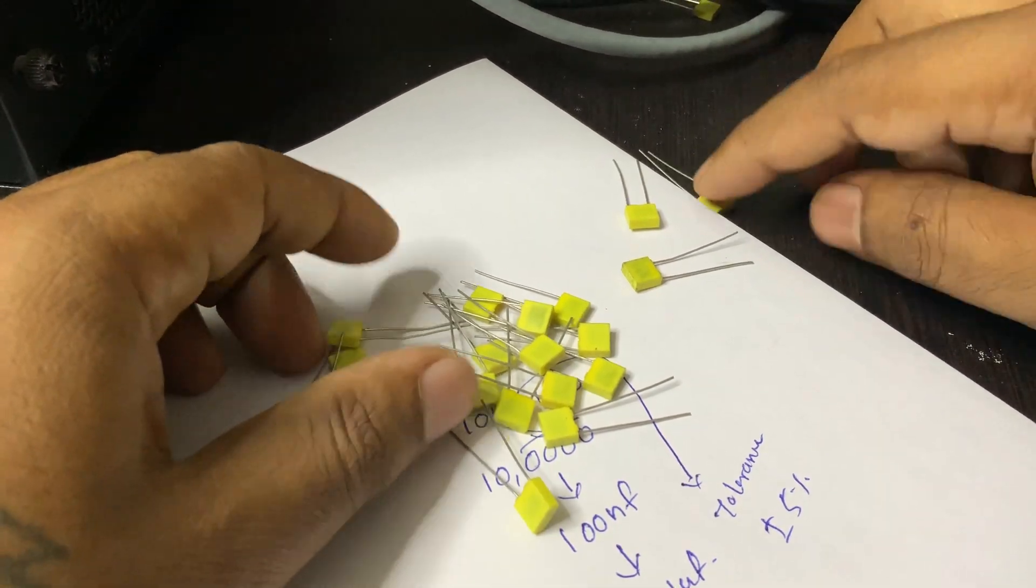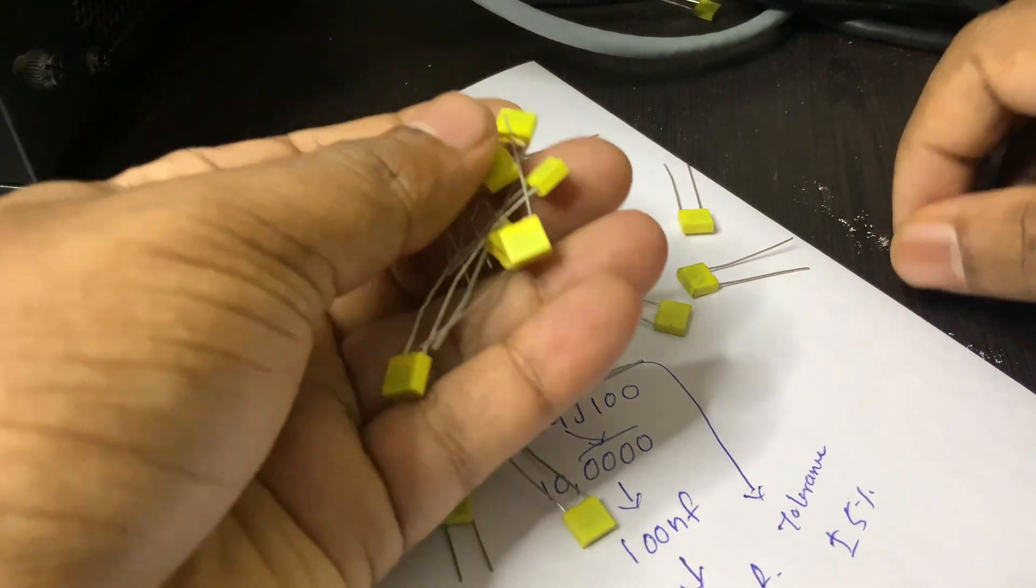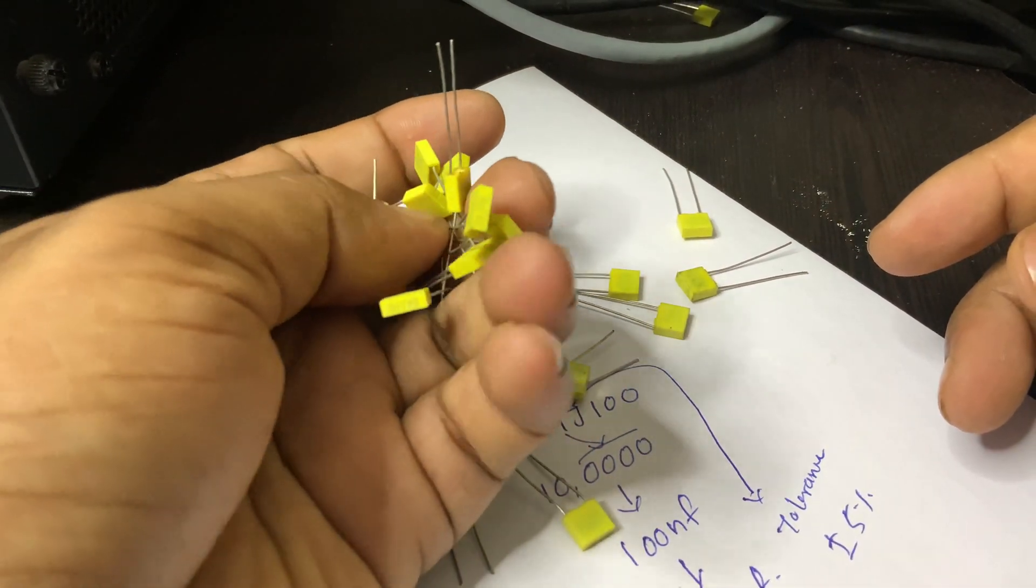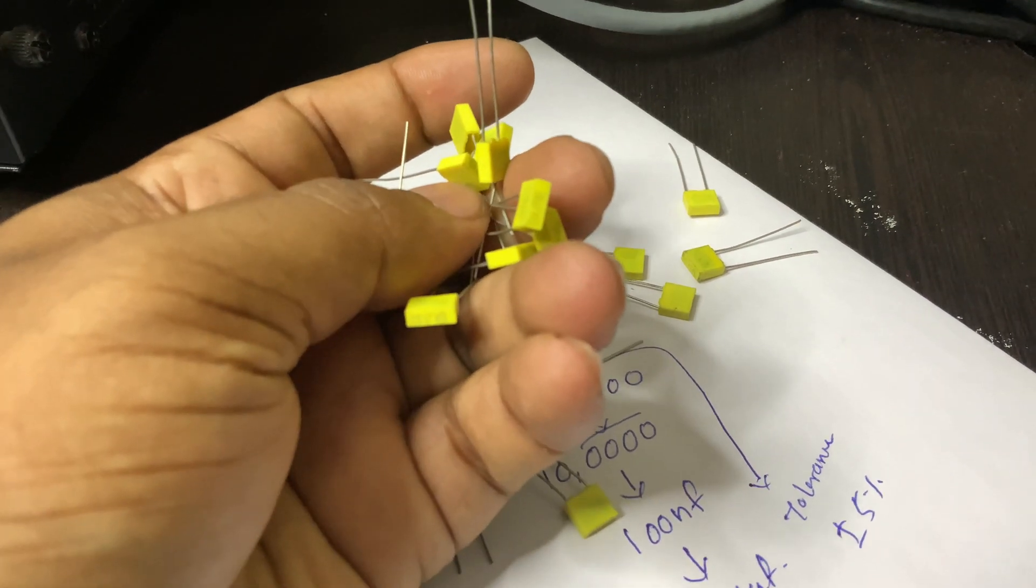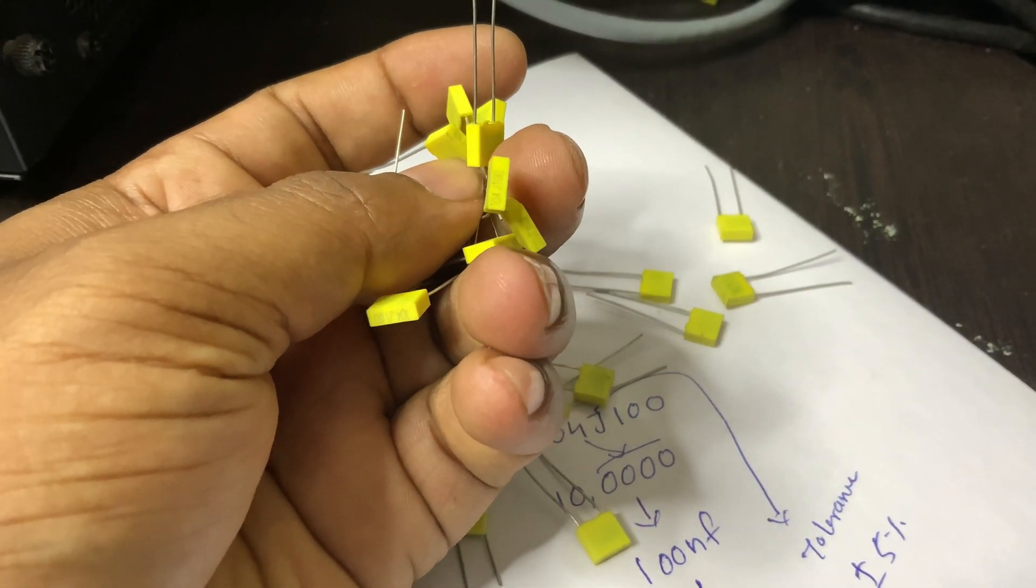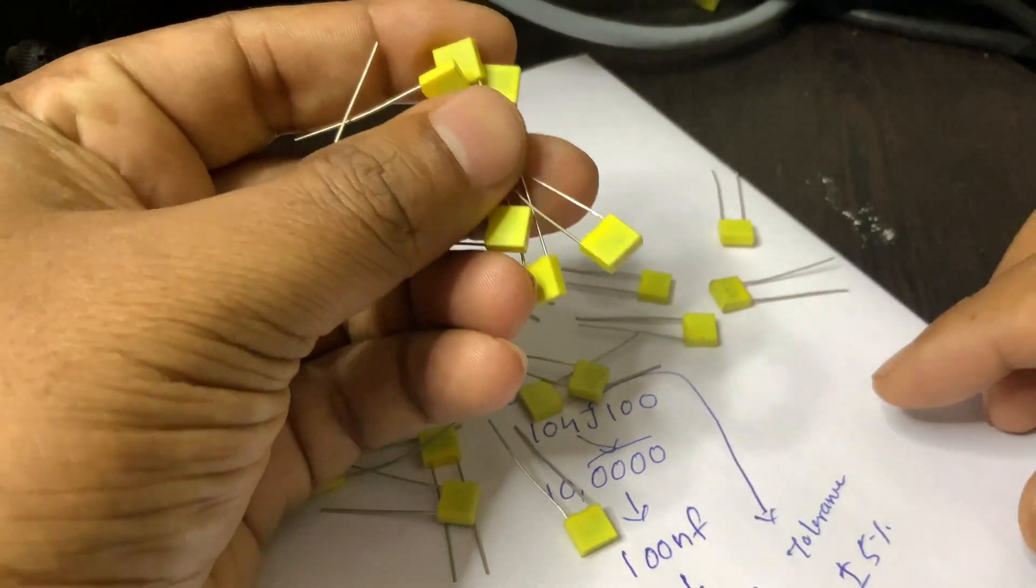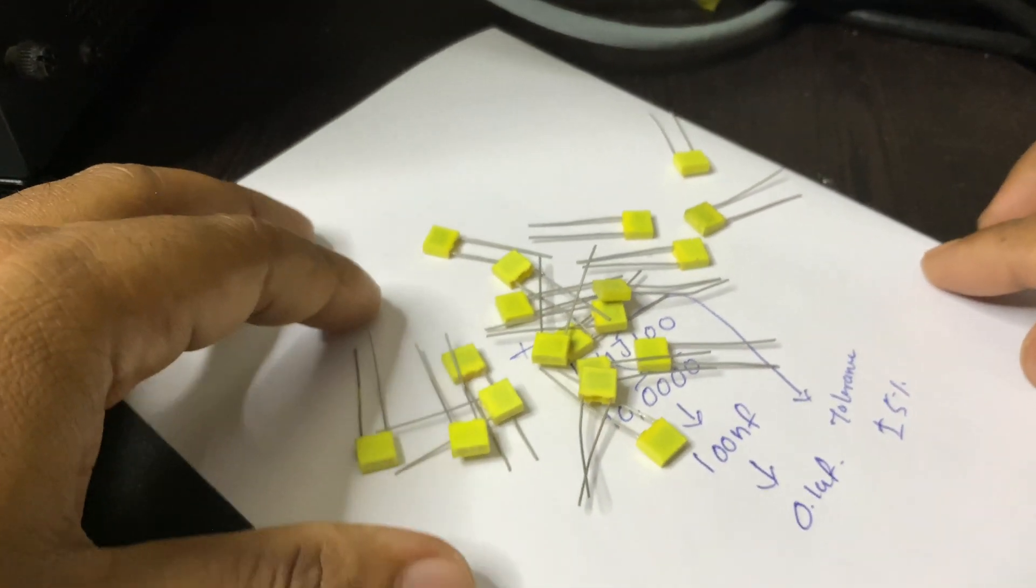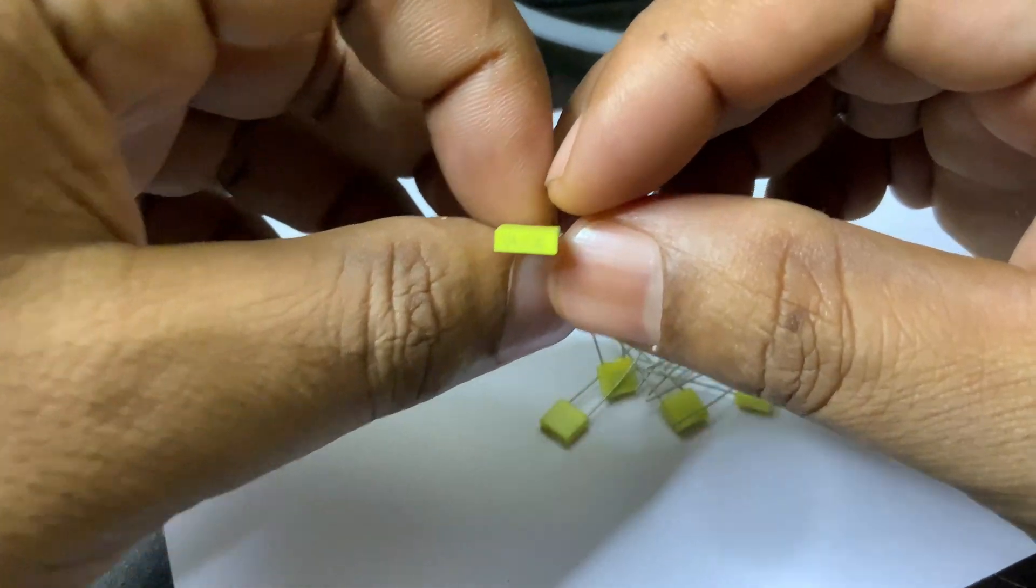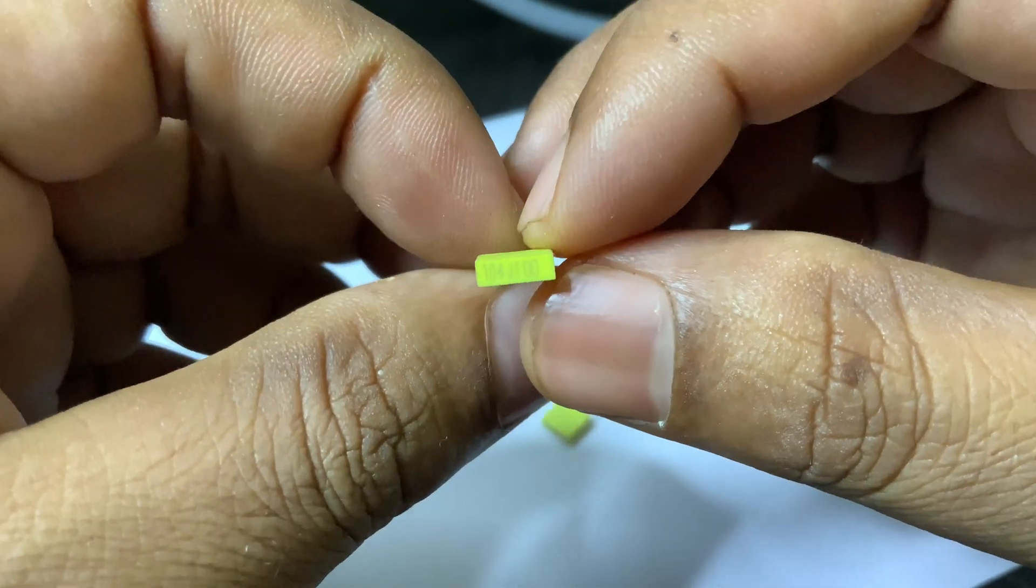Capacitors like the 104J are used in a wide range of applications, such as decoupling, filtering, and signal coupling. In power supplies, they help smooth voltage fluctuations, and in audio circuits, they can block DC while allowing AC signals to pass. Their moderate capacitance value and compact size make them versatile and widely applicable in both analog and digital electronics.